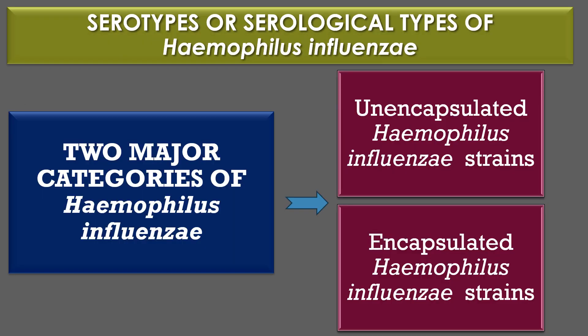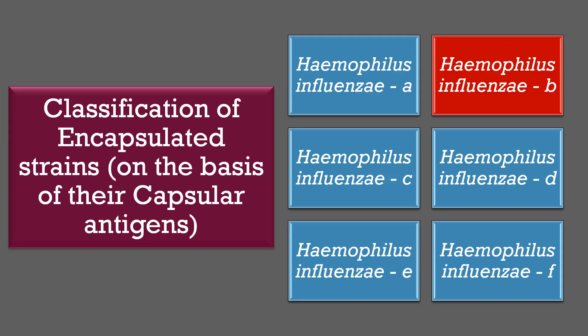Serotypes of Haemophilus influenzae: Two major categories of Haemophilus influenzae were defined. Encapsulated Haemophilus influenzae strains were classified on the basis of their capsular antigens. The six generally recognized types are Haemophilus influenzae A, B, C, D, E, and F. Among the six serotypes, Haemophilus influenzae type B was responsible for more than 95% of infections, because it is highly virulent due to the presence of polysaccharide capsules.